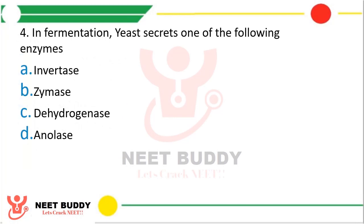Question 4: In fermentation, yeast secretes which enzyme — option A invertase, option B zymase, option C dehydrogenase, or option D enolase? The correct answer is option B — zymase is the enzyme secreted by yeast that is responsible for fermentation.